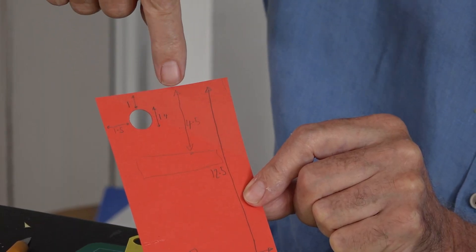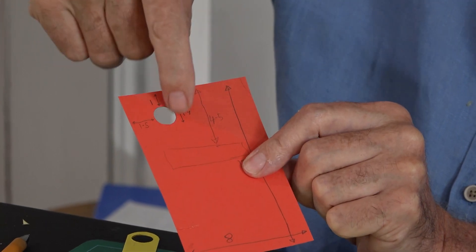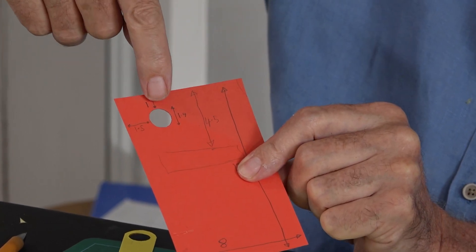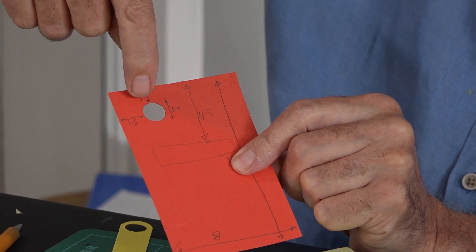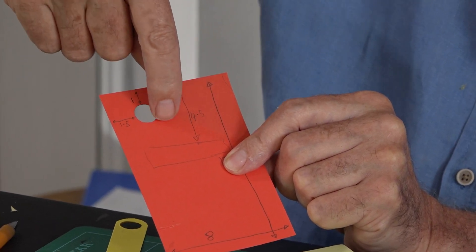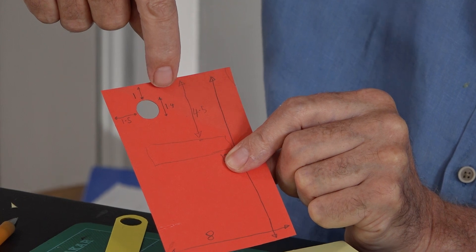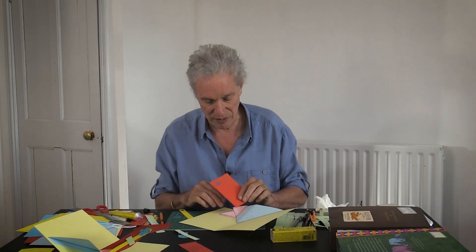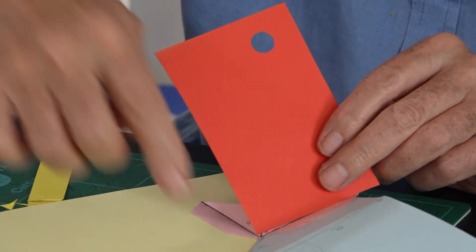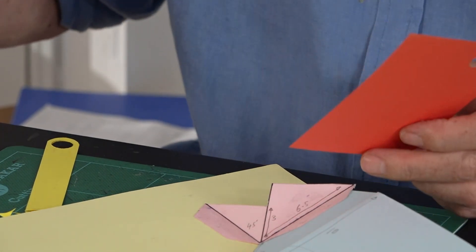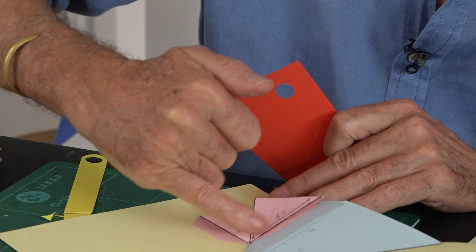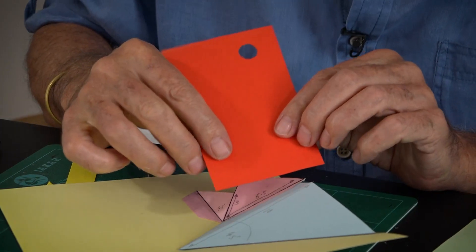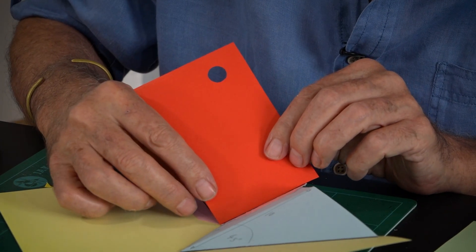And this hole is one centimeter below the top, one and a half centimeters in from the edge, and the diameter of it is 1.4 centimeters. So I'll glue this on. You want the hole away from the center point. So I'll put the glue on this large triangle. Stick that on so the corner goes right into the triangle.